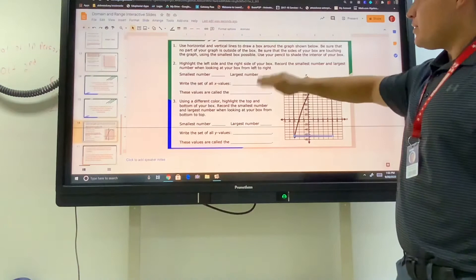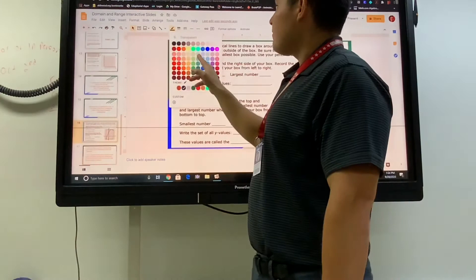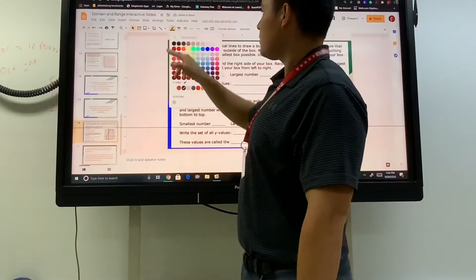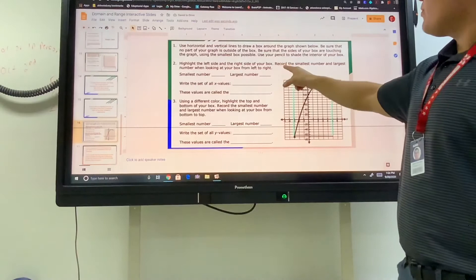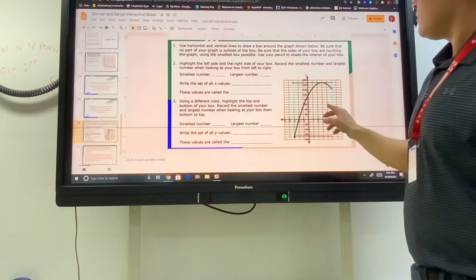Highlight the left and right side. So let's change those, the left side and the right side, to be a different color other than black. We can make these blue. Record the smallest number and the largest number from left to right.